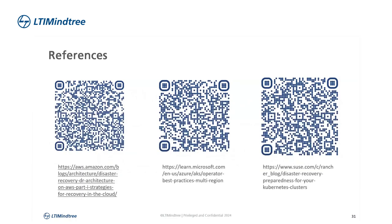Some reference resources to wrap up: the first is AWS fundamentals on disaster recovery, the second is from Azure on highly available AKS, and the third is from Rancher. QR codes are provided so you can scan and access them. That's pretty much it on this topic.